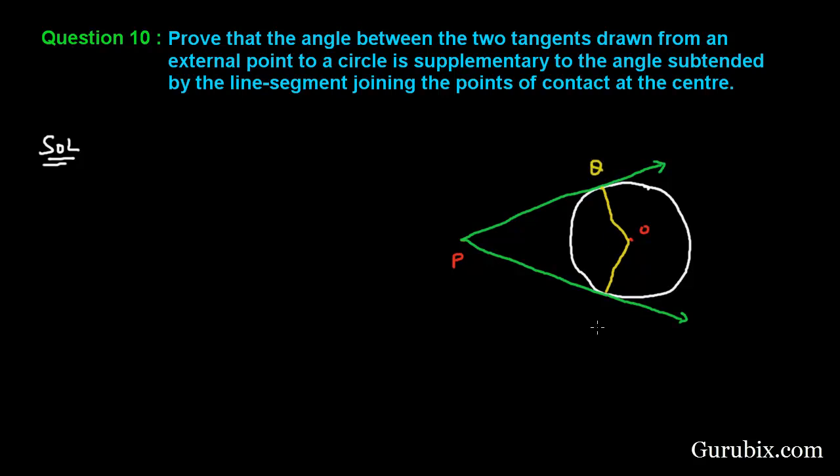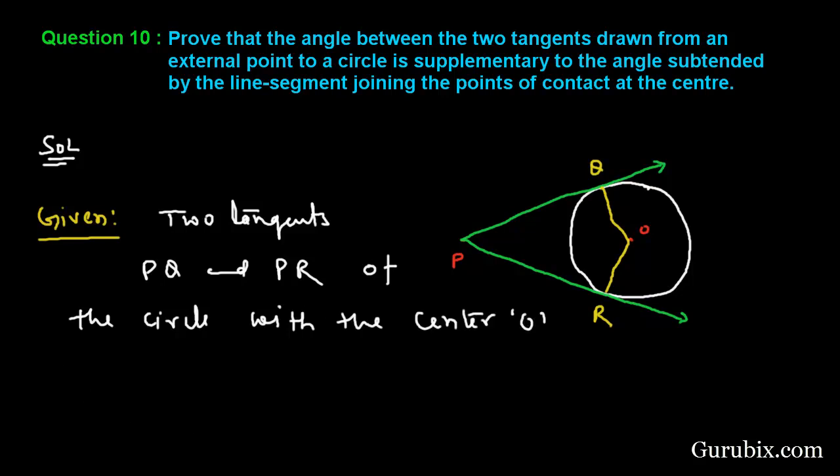Suppose this is Q and this is R. So this is what we have been given. We shall write here: Given, two tangents PQ and PR of the circle with center O, and we have to prove that the sum of angle QPR plus angle QOR equals 180 degrees.